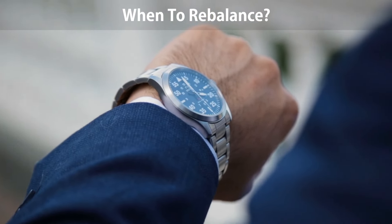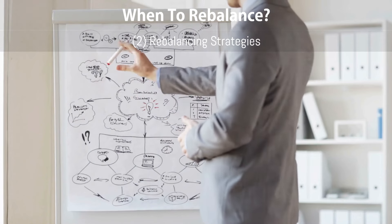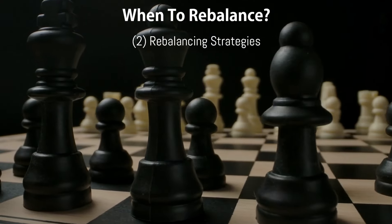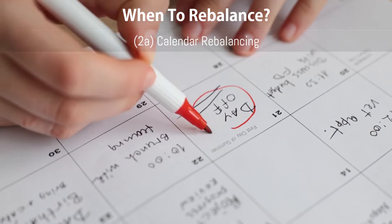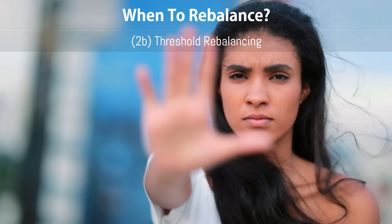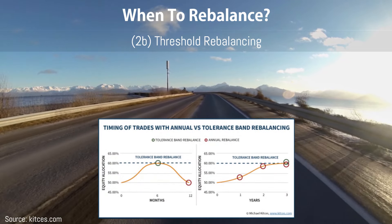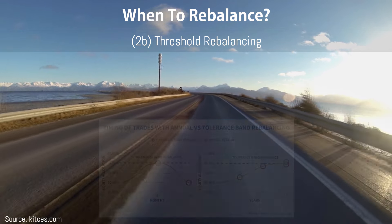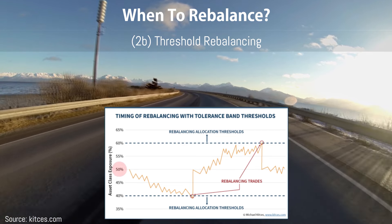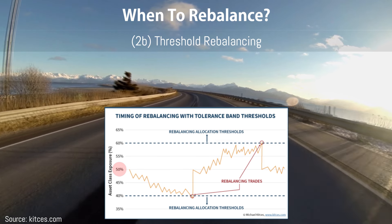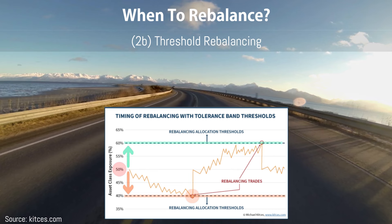This brings us to the second part of when to rebalance: rebalancing strategies, of which there are broadly four categories. Calendar rebalancing is triggered at regular intervals, such as annually, semi-annually, or quarterly. Threshold rebalancing kicks in when your asset allocations deviate from their target by a predetermined threshold, such as 5% or 20%. This can be done using absolute or relative thresholds — I personally prefer relative thresholds, as it tailors the thresholds to the size of each asset allocation. For example, applying a 20% relative threshold to an asset comprising 50% of your portfolio gives us 60% and 40% for the high and low thresholds respectively. Rebalancing is triggered when these thresholds are breached.